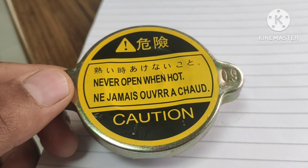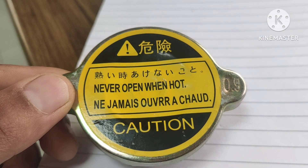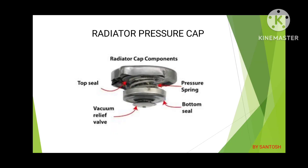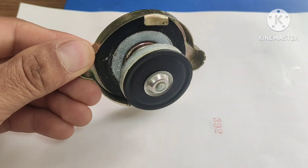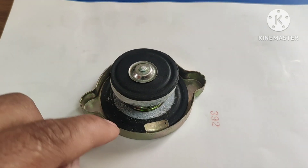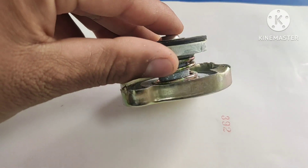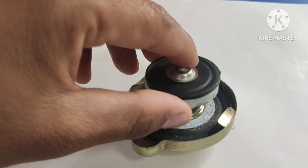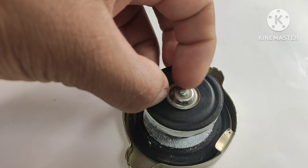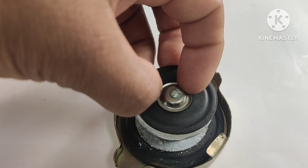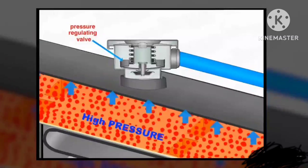To maintain the pressure inside the system, this radiator pressure cap is used. Now let's see its design. It has a top seal and a bottom seal, as well as a pressure spring and vacuum relief valve, which are the major components. You can see the real radiator pressure cap on your screen — this is the top seal, this is the bottom seal, and inside you can see the spring called the pressure spring, made of steel. This is the vacuum relief valve.